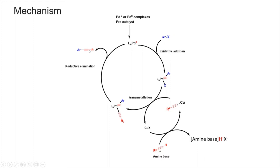Then by reductive elimination, the palladium catalyst returns from Pd(II) back to Pd(0) — accepting two electrons — and the aryl group connects to the alkyne part to give your final product: a carbon-carbon triple-bonded compound. This is the basic reaction mechanism of Sonogashira coupling, where the copper iodide additive acts in a separate catalytic cycle to connect the terminal alkyne to the palladium catalyst.